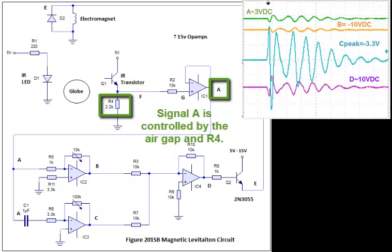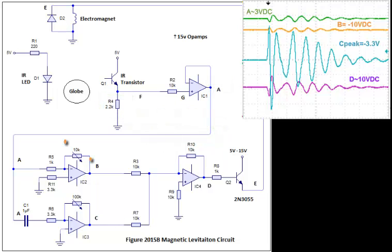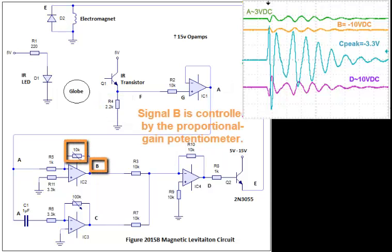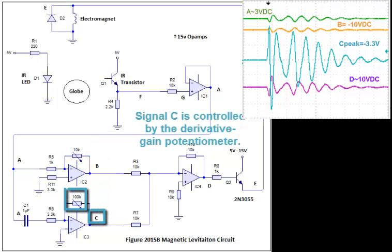Signal A is controlled by the air gap and R4. Signal B is controlled by the proportional gain potentiometer. Signal C is controlled by the derivative gain potentiometer.